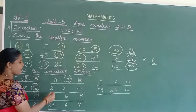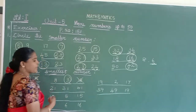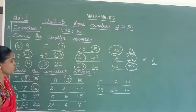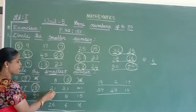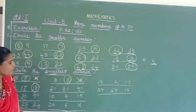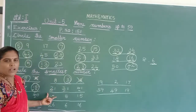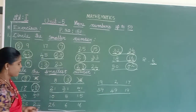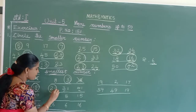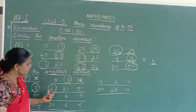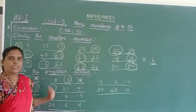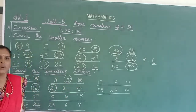Next: 21, 31, 41. Everything is 2-digit. Come to the tens place: 2, 3, 4. Which is the smallest? 2 is the smallest. So 21 is the smallest one in this group.